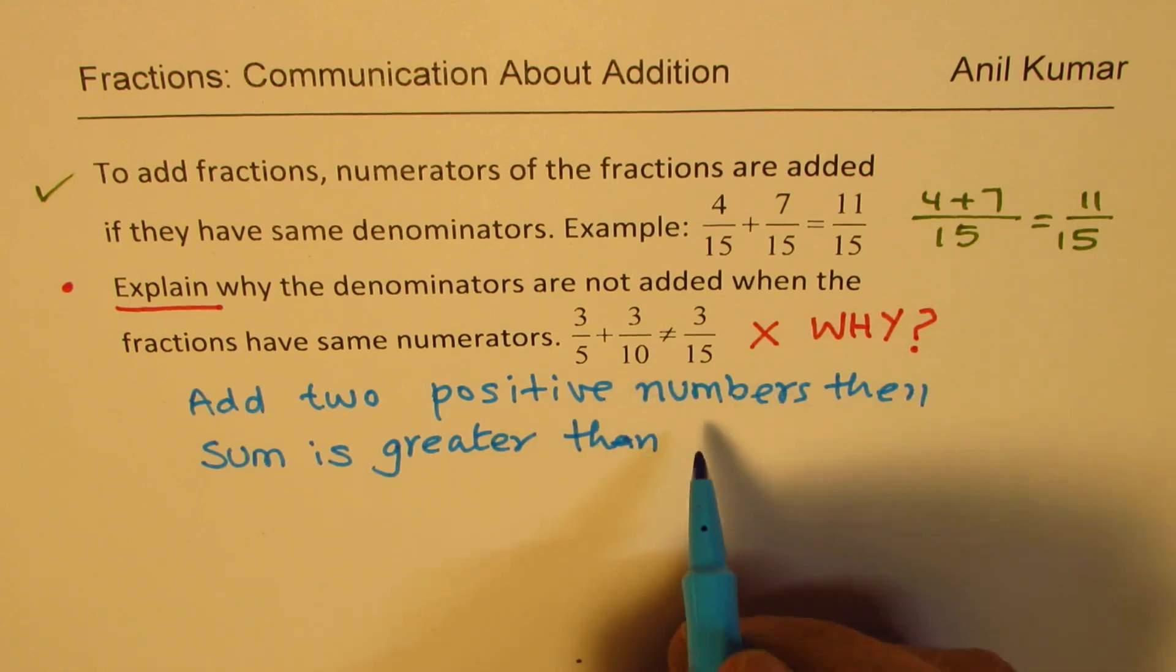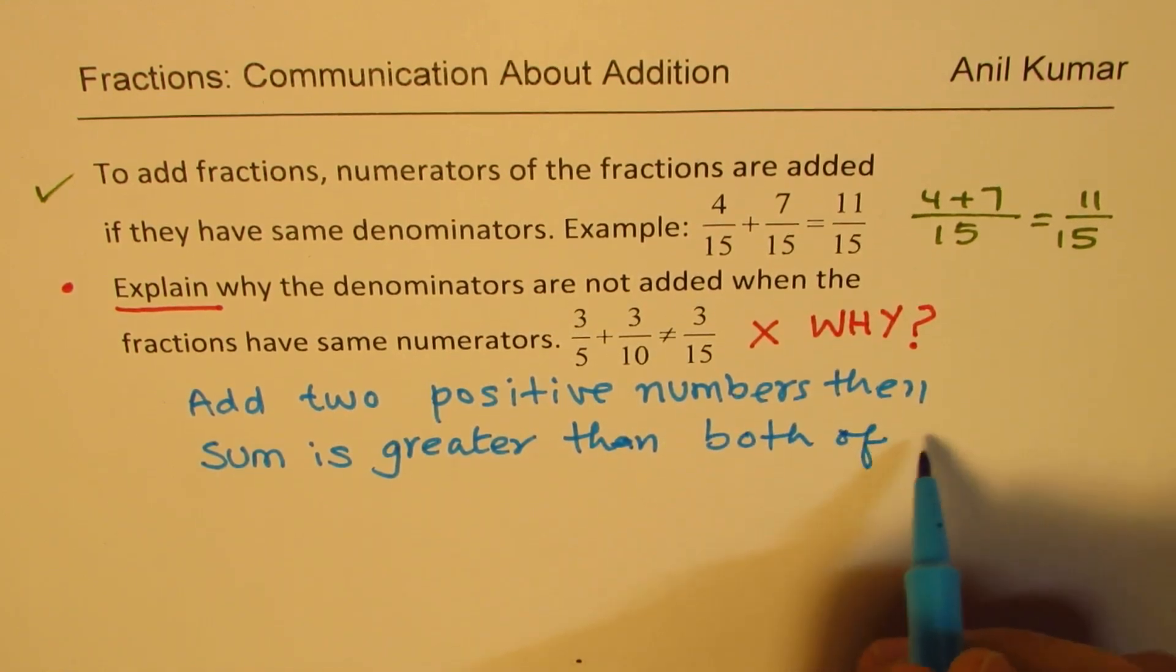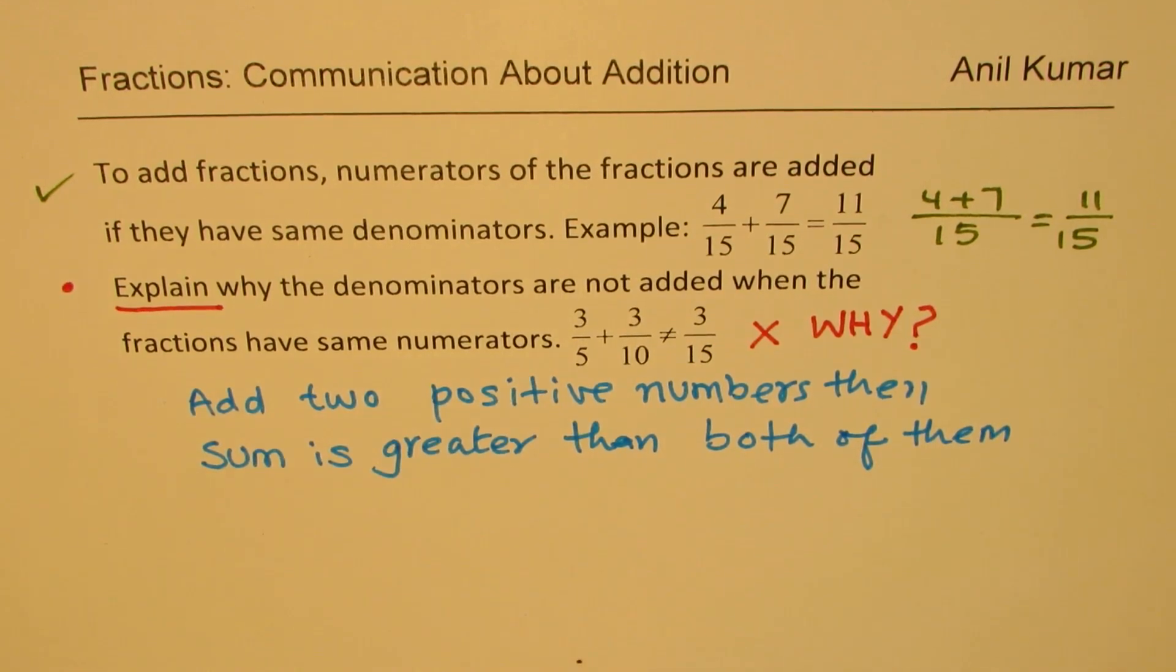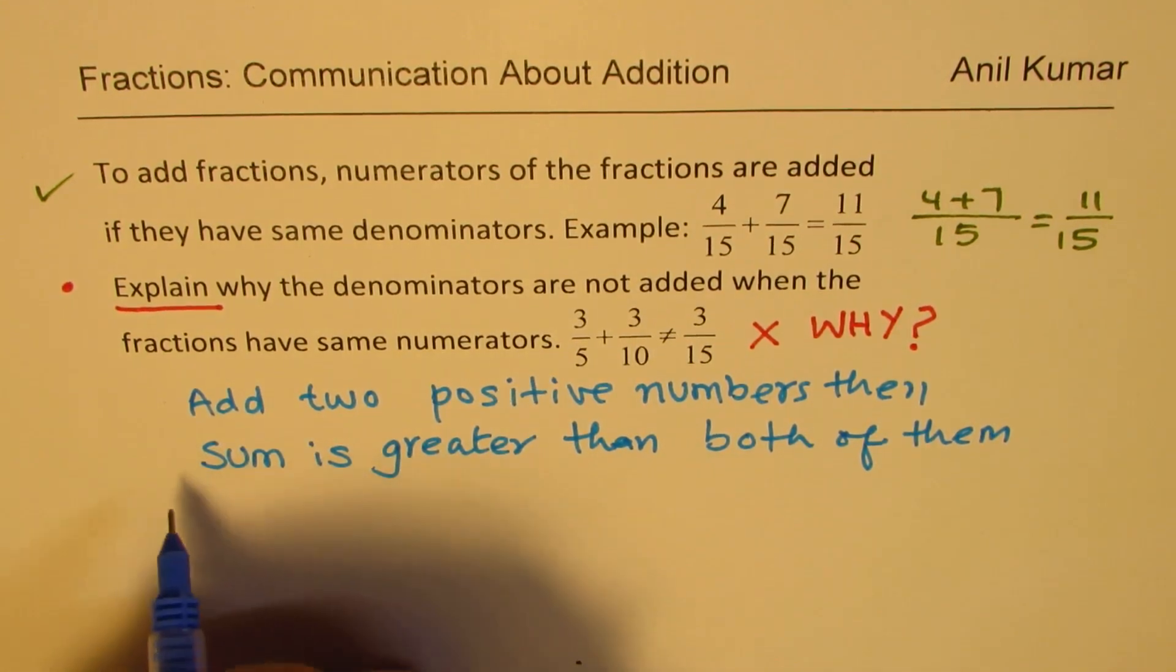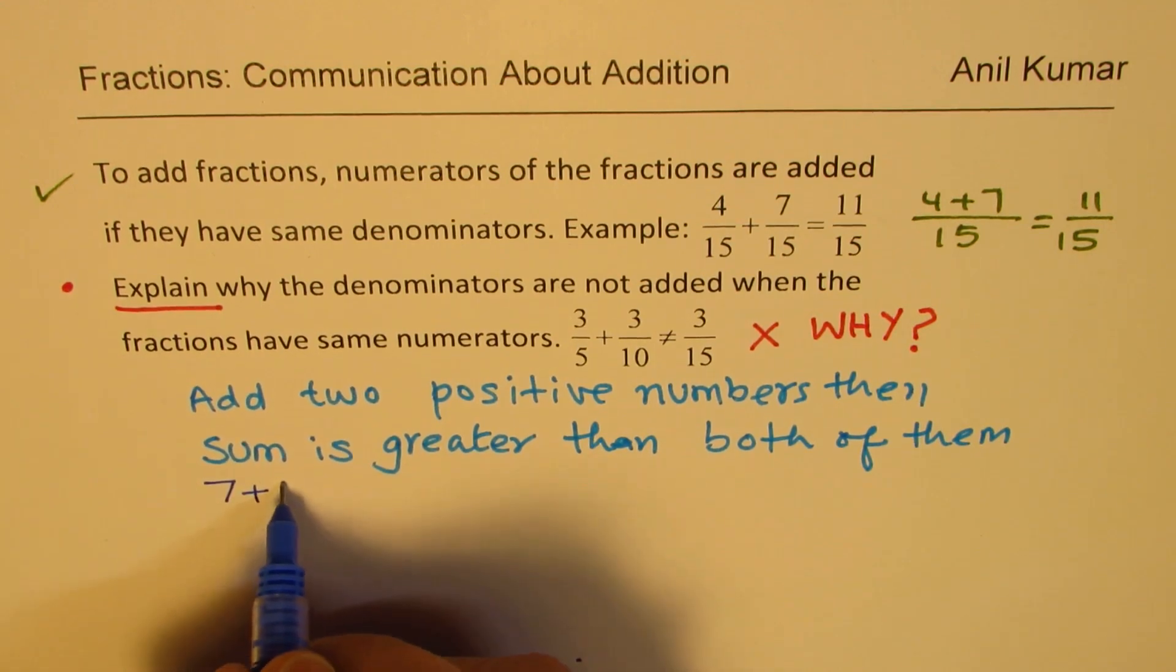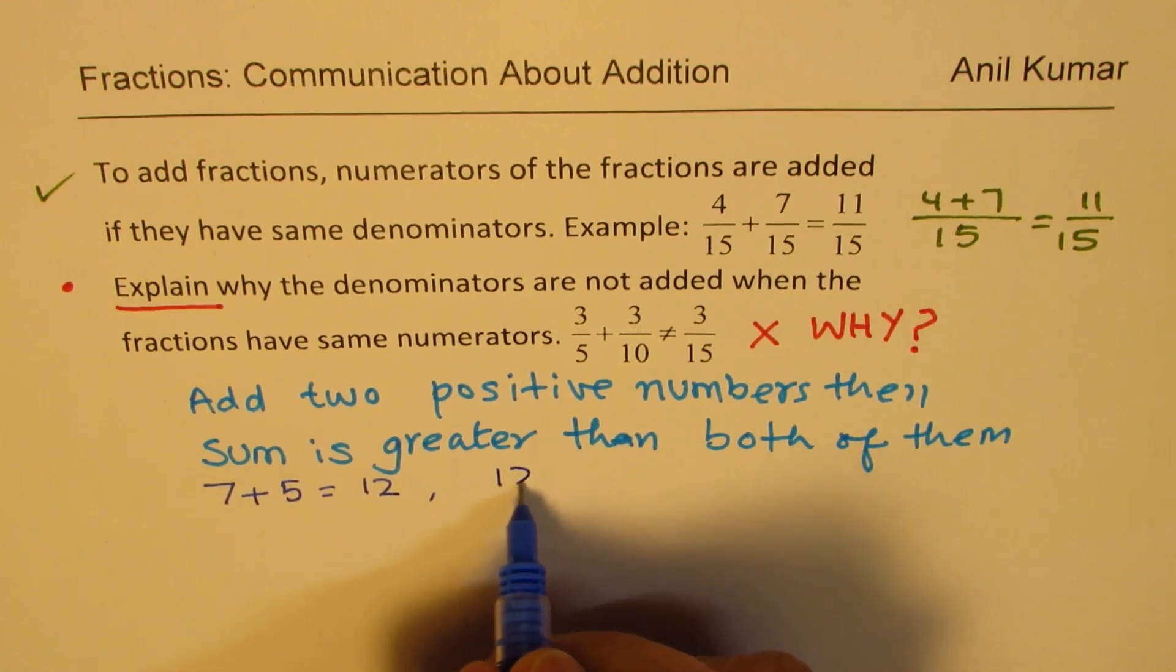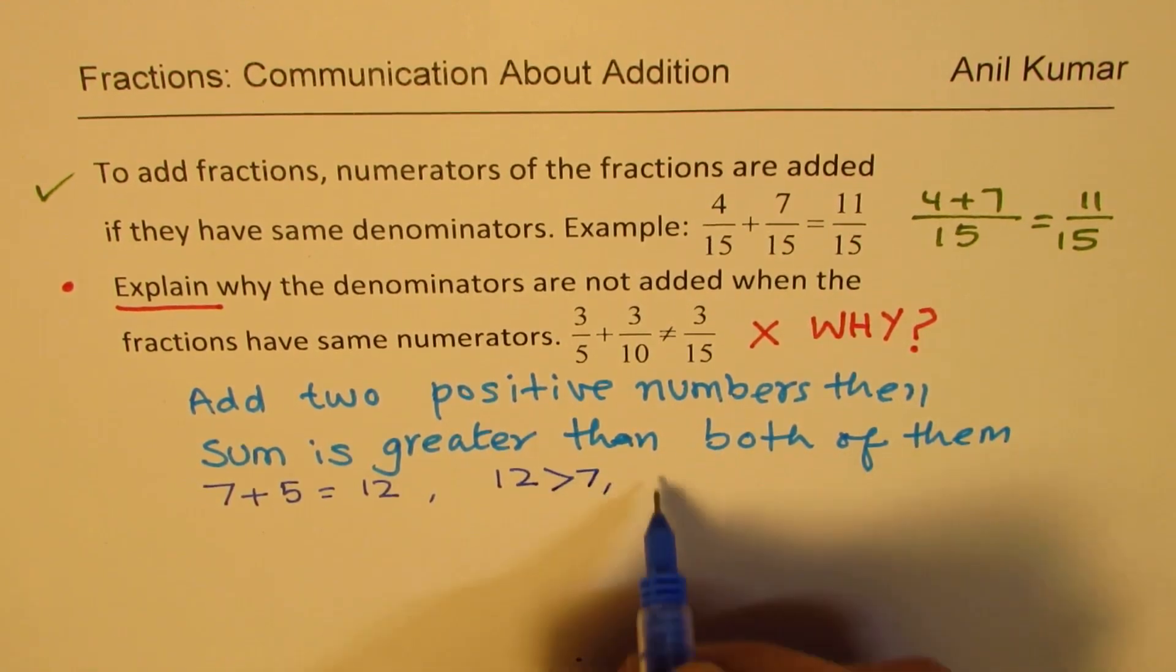So what I'm trying to say here is that the rule is, if I add something to 7, let's say 5, I get 12. We know 12 is greater than 7 and 12 is also greater than 5, right?